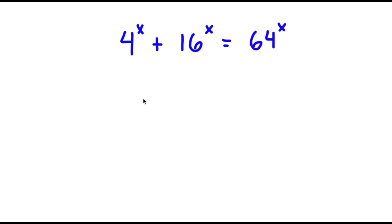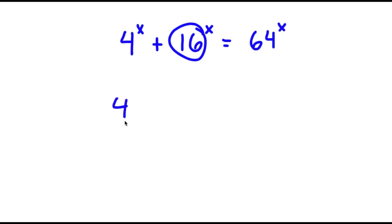In this problem, I have 4 to the power of x plus 16 to the power of x is equal to 64 to the power of x. Now 16 I can rewrite as 4 squared, so now I have 4 to the power of x plus 4 squared to the power of x.